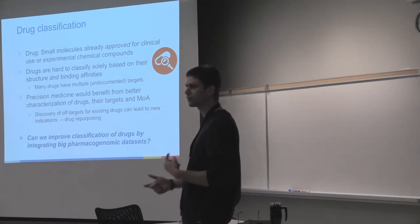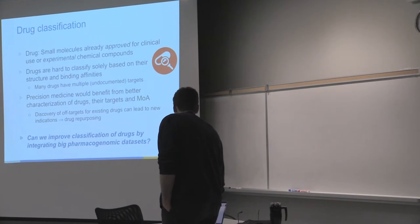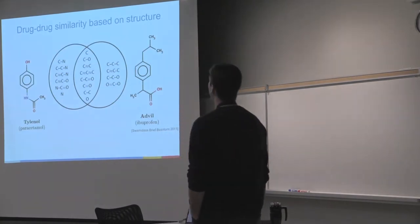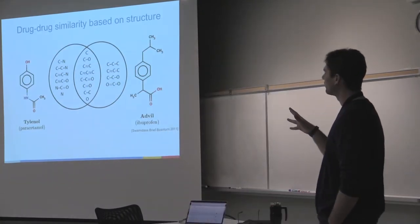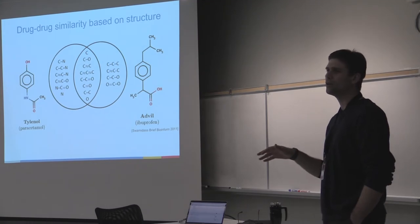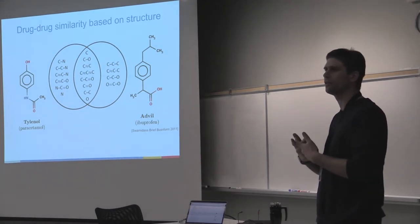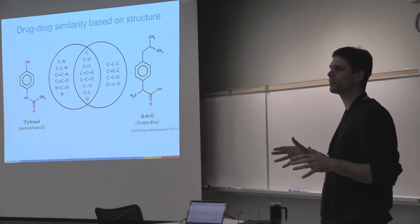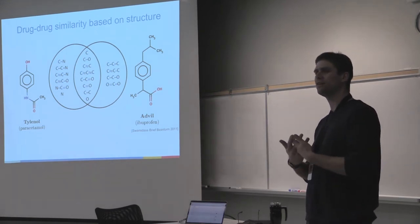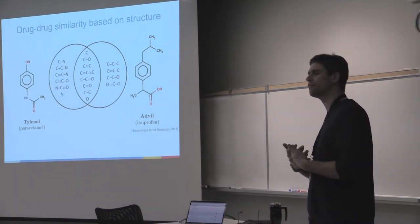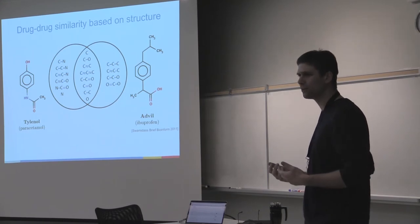I prefer to have a conversation rather than a lecture, so if you have any questions, feel free. One of the very common data layers we use to understand whether drugs are similar or not is just based on chemical structure. You can easily guess that if two drugs have very similar structures, they might be doing the same thing.